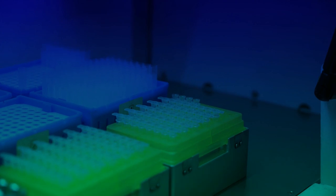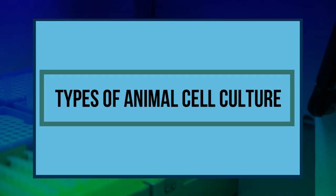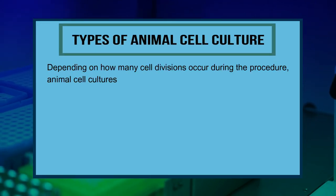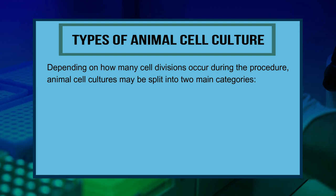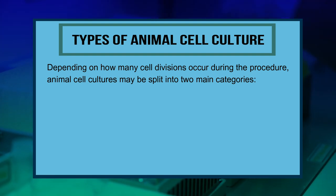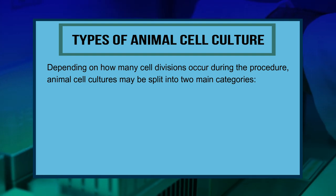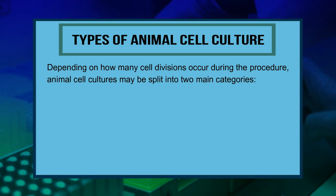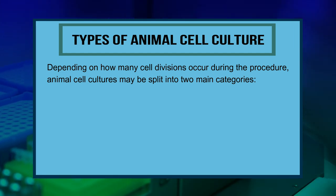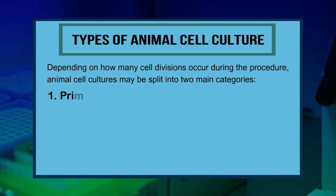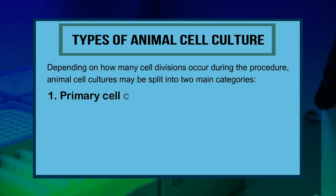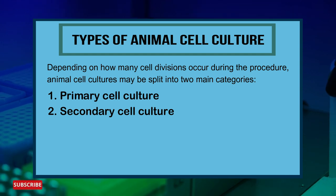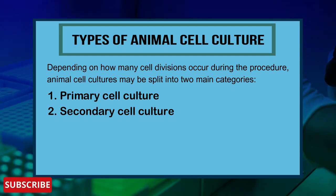Depending on how many cell divisions occur during the procedure, animal cell cultures may be split into two main categories: number one, primary cell culture, and number two, secondary cell culture.